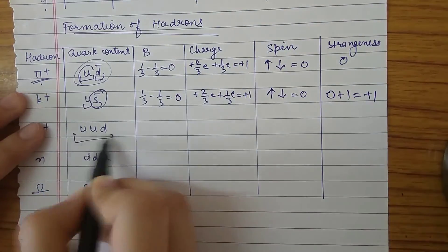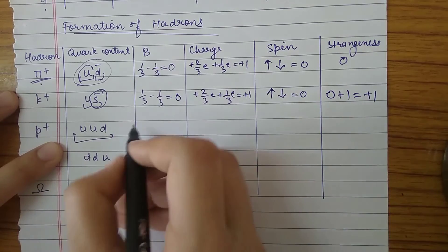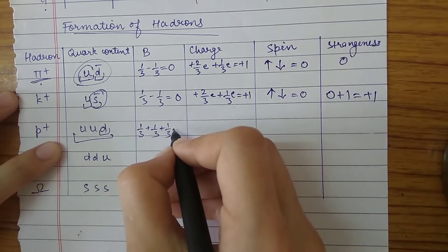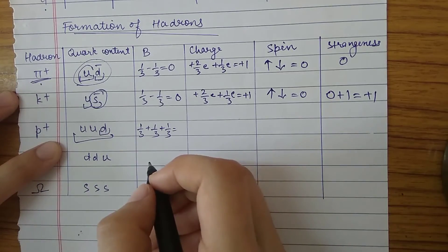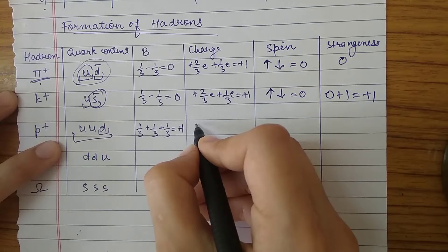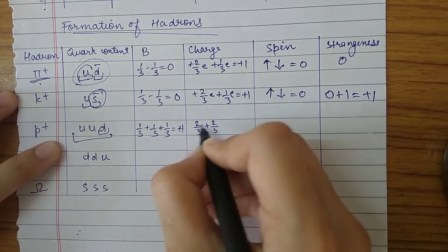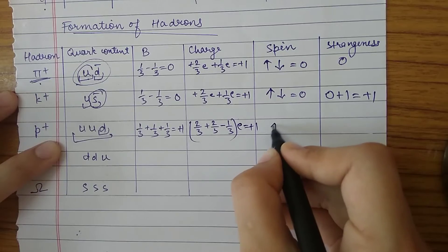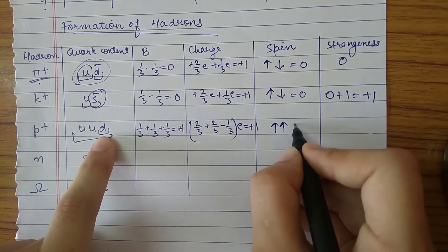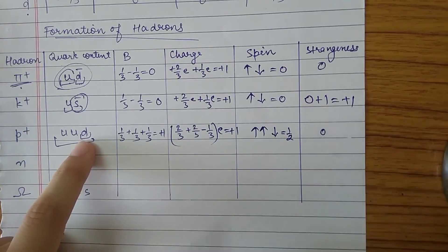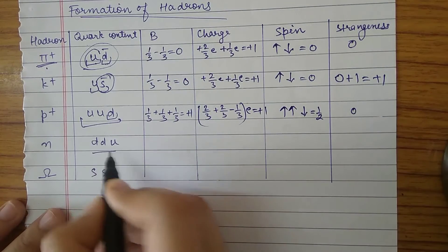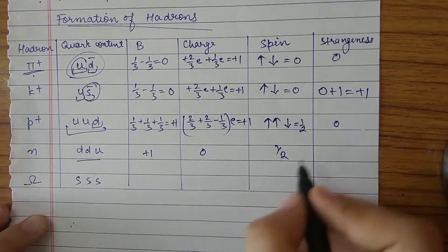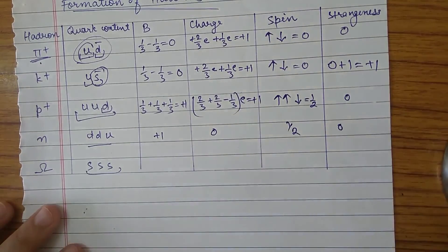For the proton (uud): two up quarks and one down quark give baryon number 1/3 + 1/3 + 1/3 = +1. Charge = 2/3 + 2/3 − 1/3 = +1. Spin = 1/2 (up quark spin up, down quark spin down). Strangeness = 0. For the neutron (udd): baryon number = +1, charge = 0, spin = 1/2, strangeness = 0.